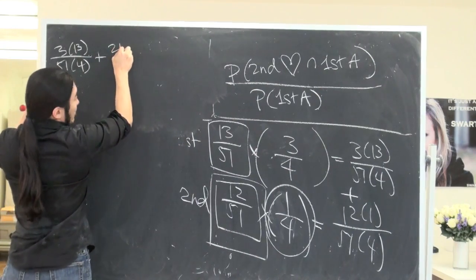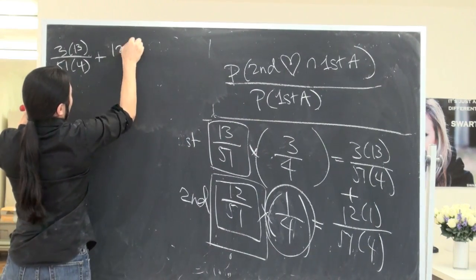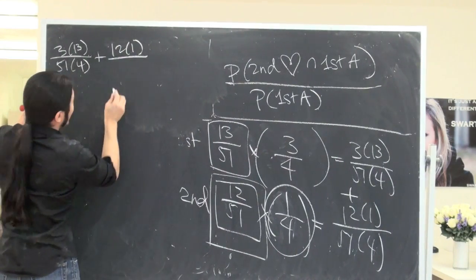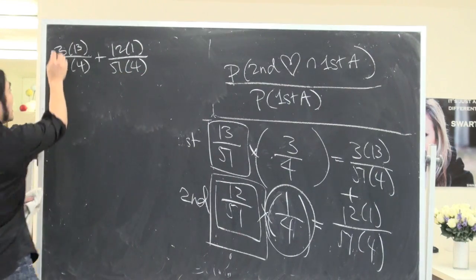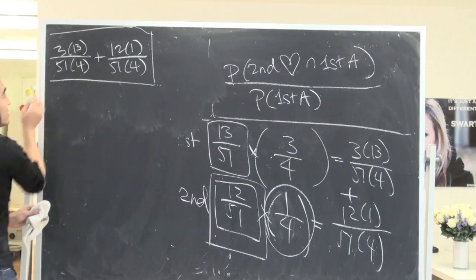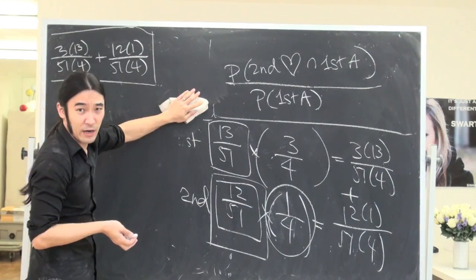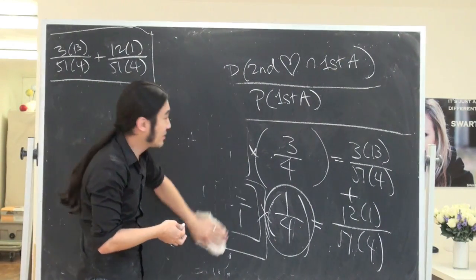Since both of these are different ways of getting what you want, you know if that happens, you need to add. We end up getting 3 over 13. We can reduce. Plus 12 times 1 over 51 times 4. This is a valid answer, and I don't think the prof will care.